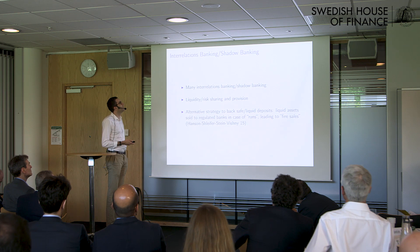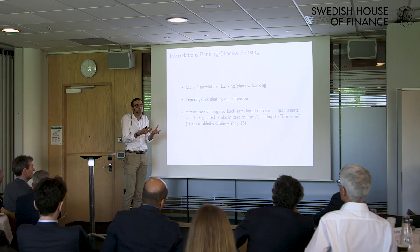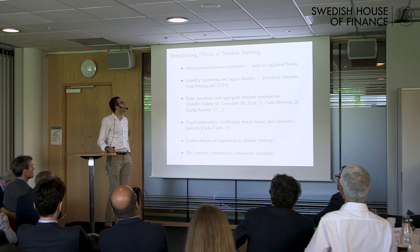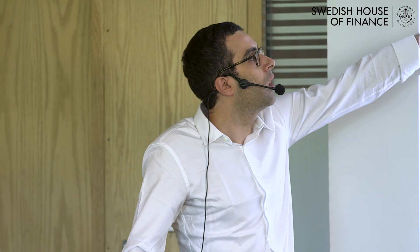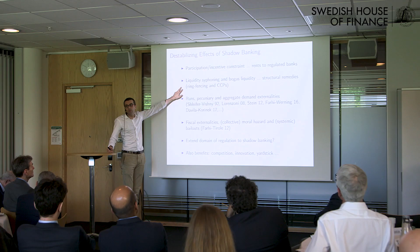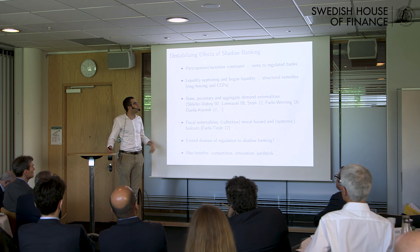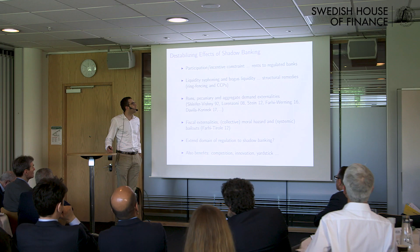In the traditional banking sector, deposits are very stable because they're insured; the shadow banking sector has a lot of destabilizing effects. The first is the option to migrate, creating a participation or incentive constraint that leads to rents in the traditional banking sector. The other is that many protections the government tries to impose through regulation are undone by the shadow banking sector — through the siphoning of liquidity and the granting of bogus liquidity and credit lines.